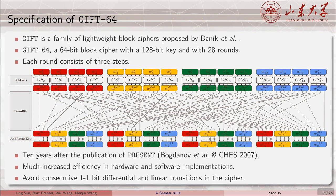GIFT was designed 10 years after the publication of PRESENT. It has much increased efficiency in hardware and software implementations, and this is realized by using an S-box with a lower implementation cost. At the same time, to avoid consecutive one-to-one bit differential and linear transitions in the cipher, the design of the bit permutation is carefully studied.